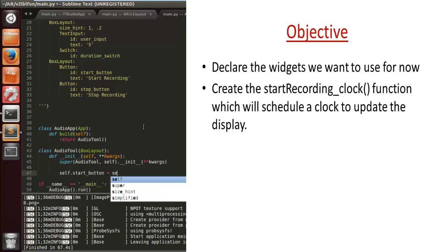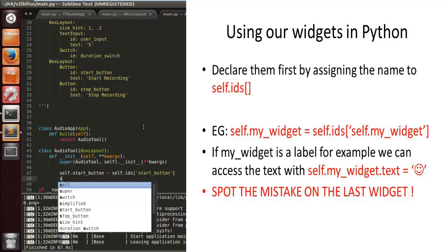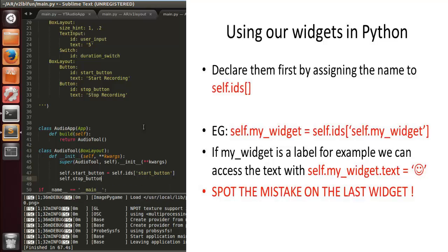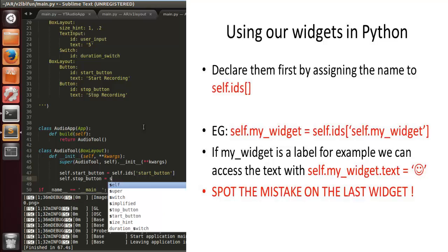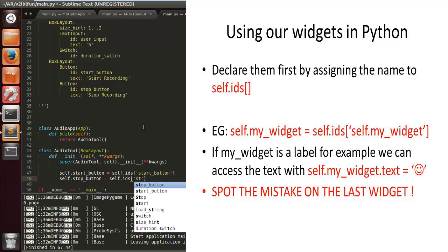To import the widgets we want to use, we choose a variable such as self.startButton, which is exactly the same name as we gave the ID to start button. But you can name it whatever you want — for example, x equals self.ids.startButton. It's a lot easier to understand it this way though. So we've got start button and stop button.